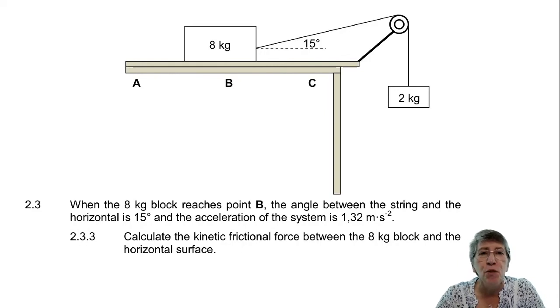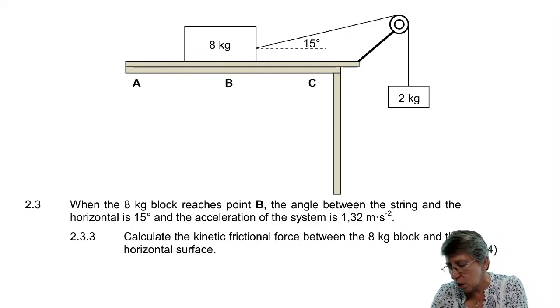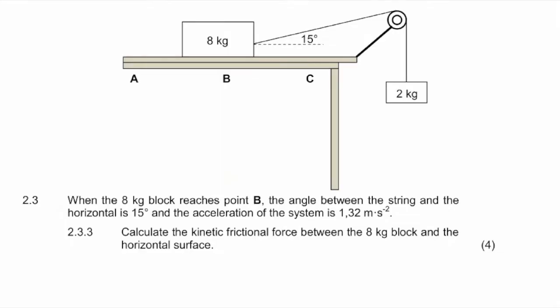In 2.3.3, they ask us to calculate the kinetic frictional force between the 8 kilogram block and the horizontal surface. We've calculated the tension as 16.96 N, and remember in a rope the tension on both sides is equal, so the tension on that side is also 16.96 N.